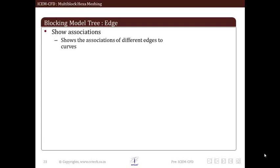If we enable show association, it displays associations of different edges to curves. This helps in knowing whether any edge is missed to be associated and even whether edge is properly associated to desired curve.